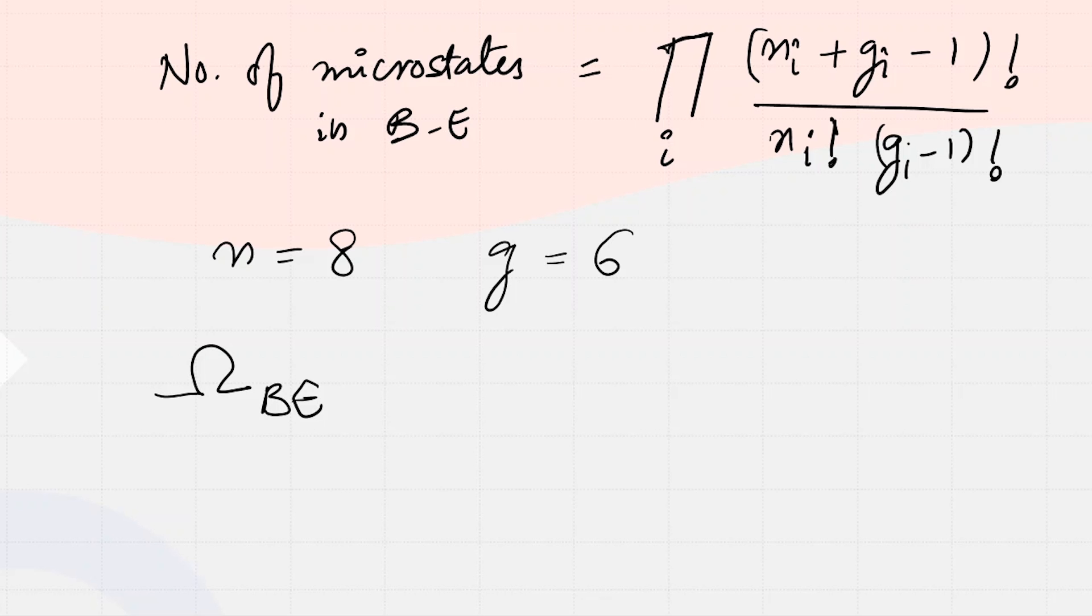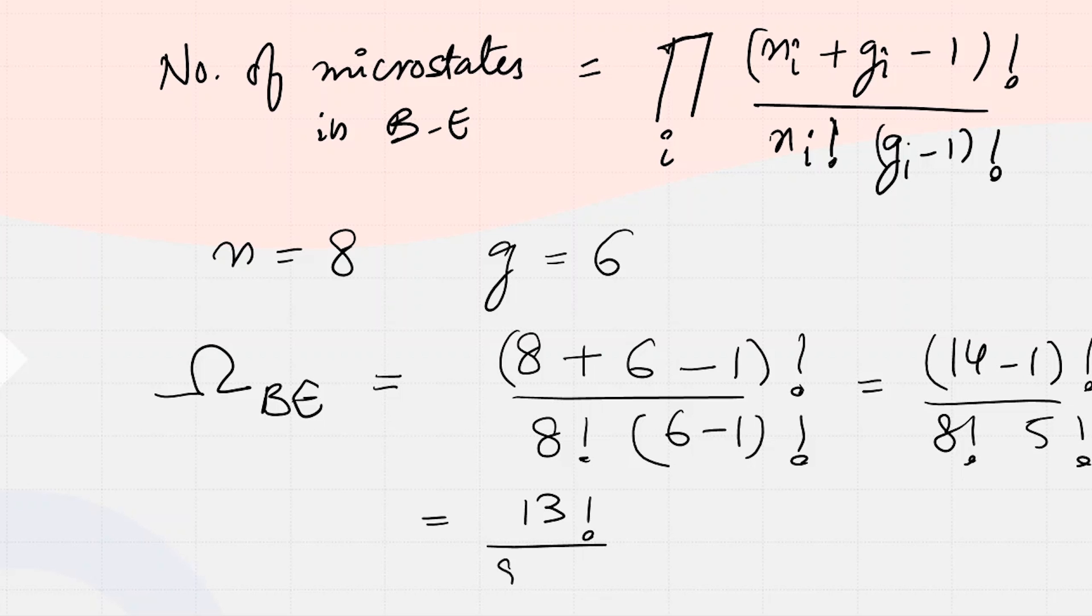We are having one system, so this is 8+6-1 = 13. So we get (13)! divided by (8! × 5!). This is 13 factorial over 8 factorial times 5 factorial. This is our number of microstates.